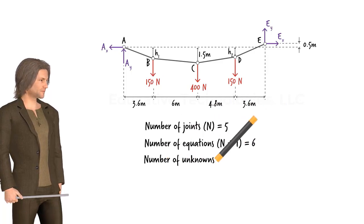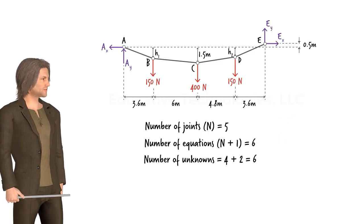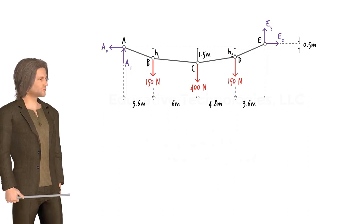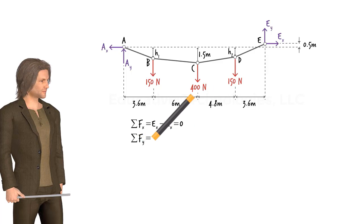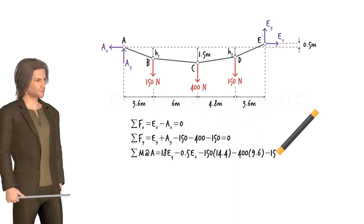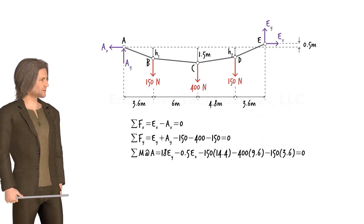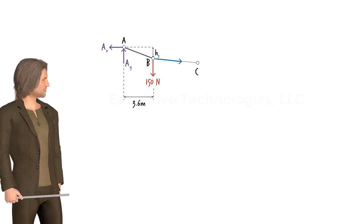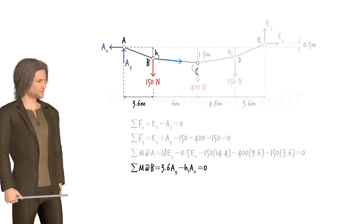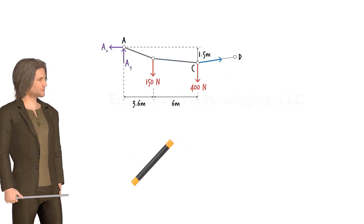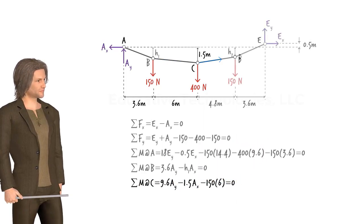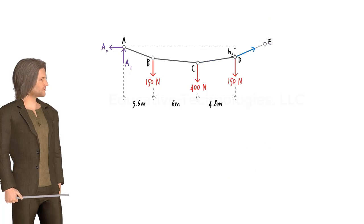Notice that we have a total of 6 unknowns: 4 unknown support reactions and 2 unknown heights. We start by writing 3 equilibrium equations for the system as a whole. If we cut segment BC and draw the free body diagram of the left subsystem, we can write one equilibrium equation. Furthermore, if we cut segment CD, we can write another, and if we cut segment DE, we get a third additional equation.